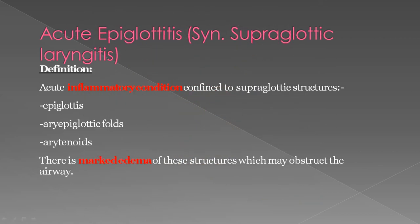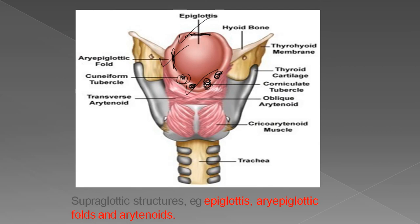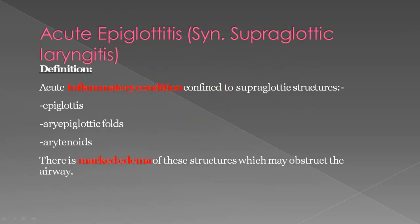Acute epiglottitis is also called supraglottic laryngitis. It is an acute inflammatory condition confined to supraglottic structures — the epiglottis, aryepiglottic folds, and arytenoids — with marked edema of these structures which may obstruct the airway.